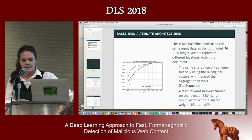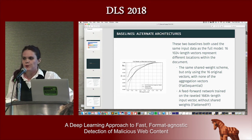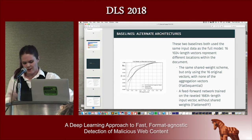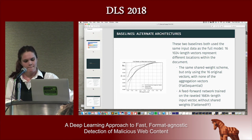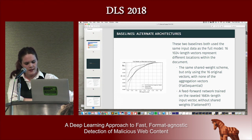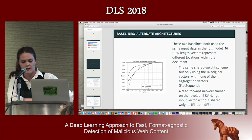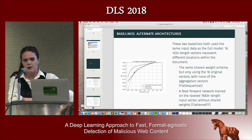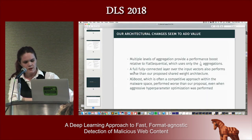A second set of baselines tested specific architectural ideas. 'Flat sequential' uses the same shared-weight inspector scheme but only the 16 original one-sixteenth vectors — no higher-level aggregations — and performs less well, providing convincing evidence that higher-level aggregations add value. We also tried a feed-forward network trained on the full 16,384-dimensional input vector without shared weights, where there's a weight for every hash space and every location, and that also performed worse. Based on these baselines, we have convincing evidence that our architectural choices are adding value in this environment.